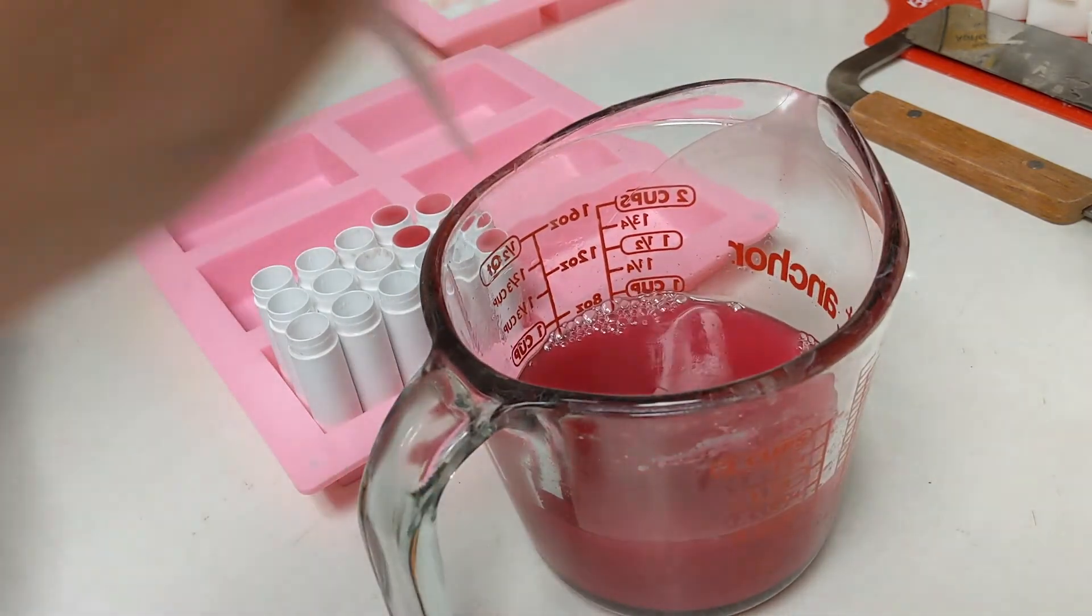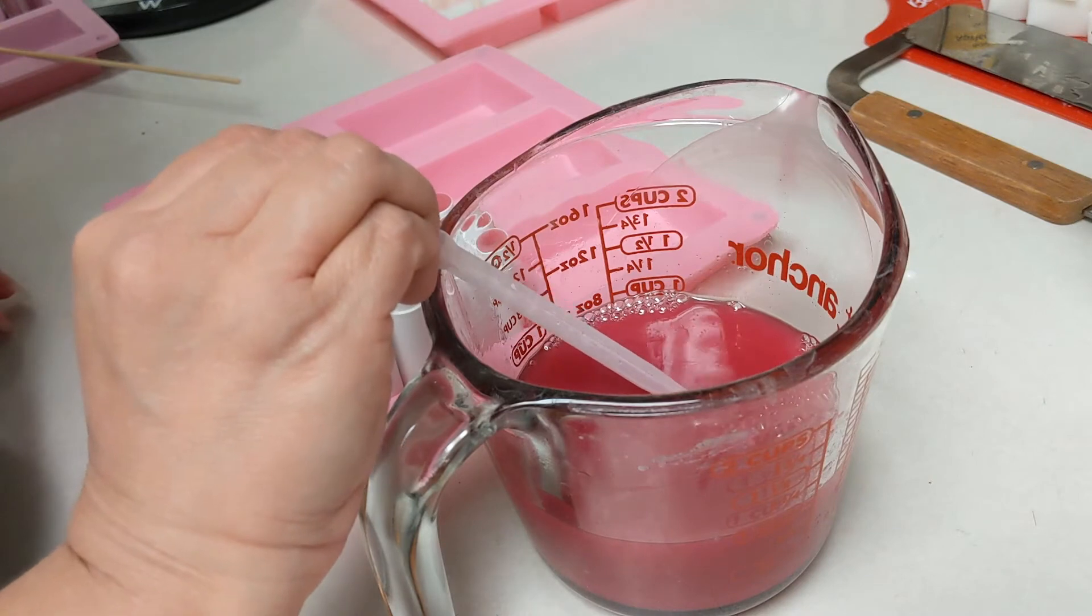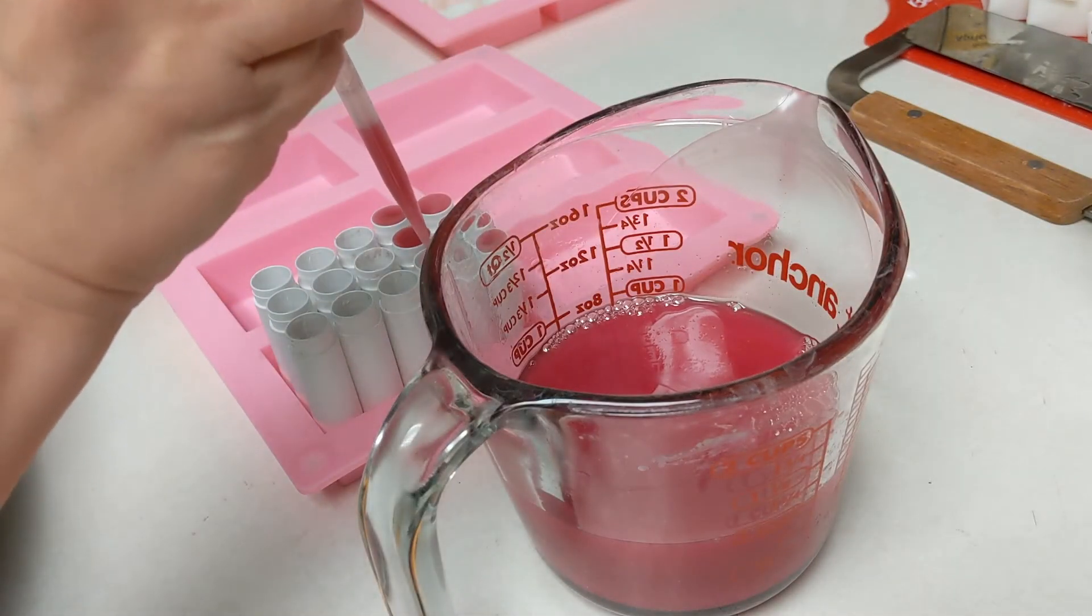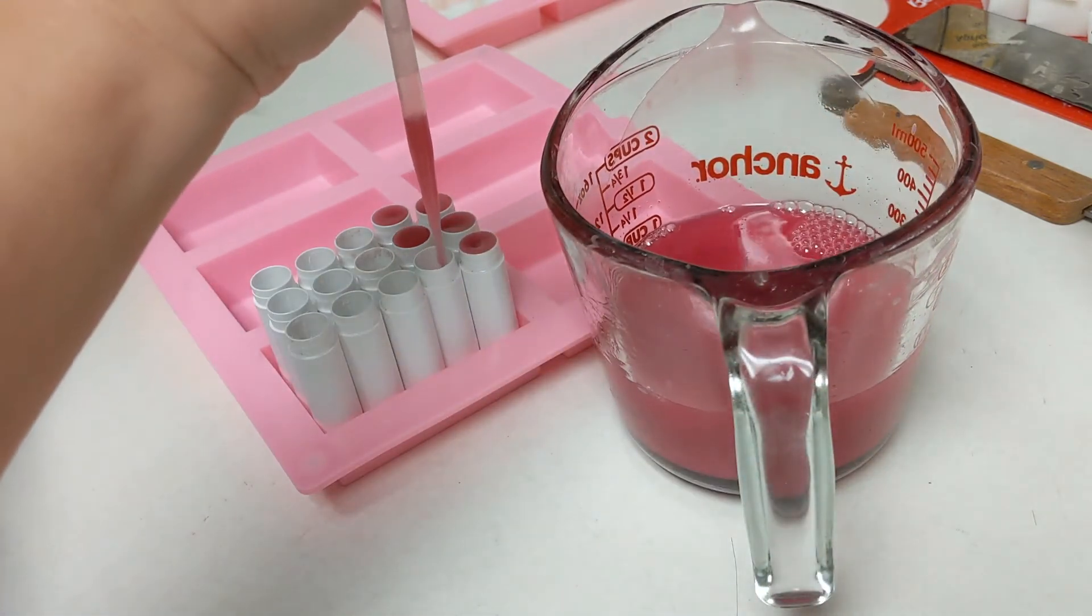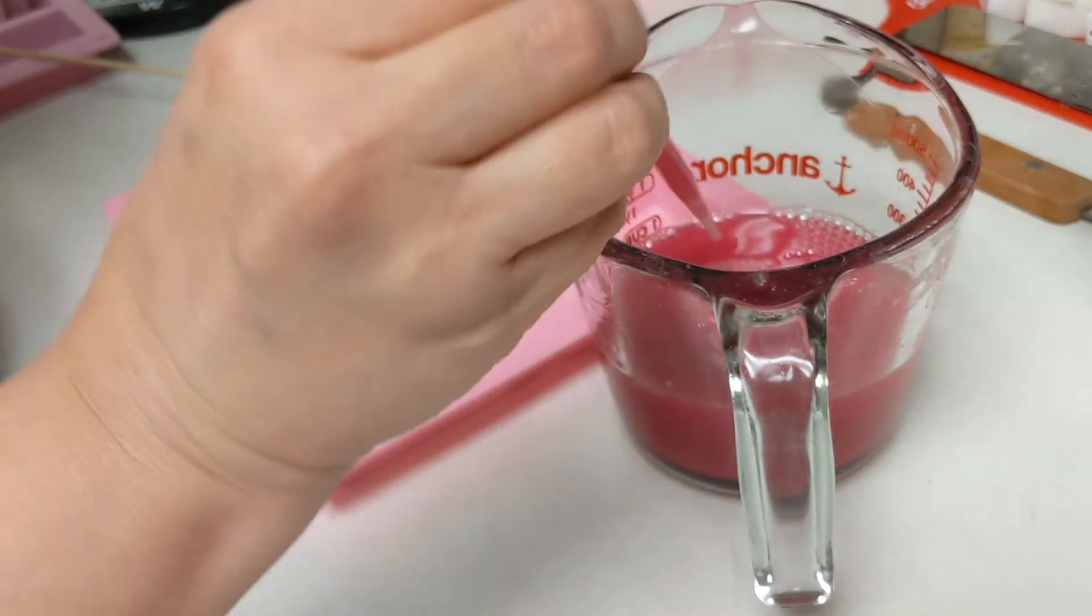So here is the pipette, the disposable pipette. I got it to a pretty high temperature, just followed the instructions on the container. Then I filled the pipette and dripped it into the lip balm tube.